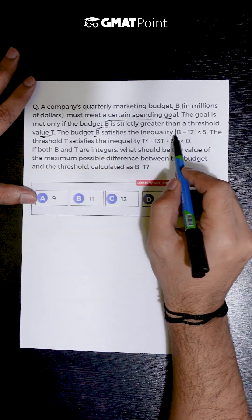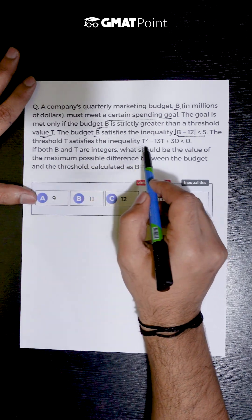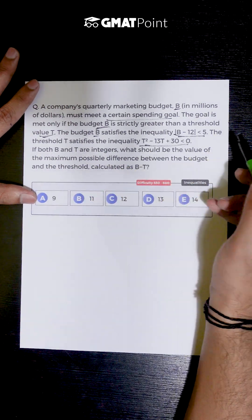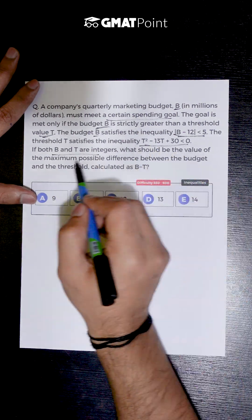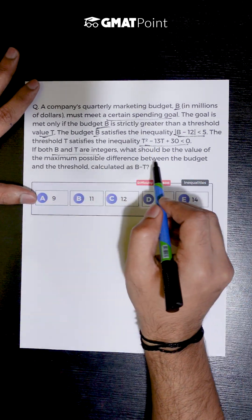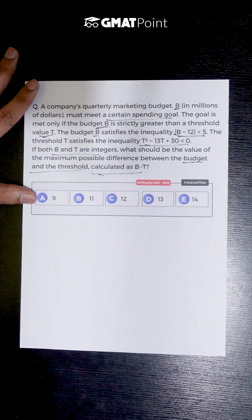The budget B satisfies the inequality |B - 12| < 5, and the threshold T satisfies the inequality T² - 13T + 30 < 0. If both B and T are integers, what should be the value of the maximum possible difference between the budget and the threshold, calculated as B - T?